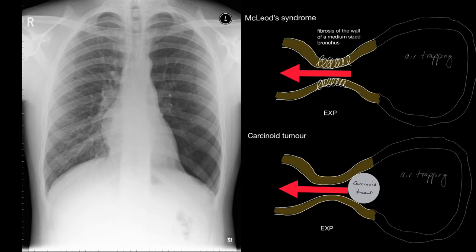Don't forget, this X-ray could equally be that of a carcinoid tumour, because over time the carcinoid tumour — albeit slow-growing — forces air trapping distal to the tumour. During expiration, the bronchial walls wrap themselves around the diameter of the carcinoid tumour, forcing air trapping, which then leads to pulmonary arterial vasoconstriction.